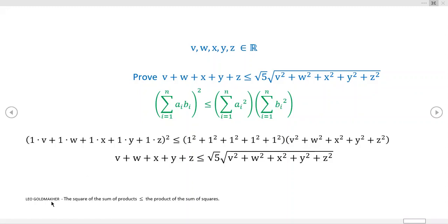This fellow, Leo Goldmacher, has a nice linguistic mnemonic for it. He says it's the square of the sum of the products, which is the left-hand side. You can see this, the square of the sum of the products. These are products, this is a sum, and that's a square.